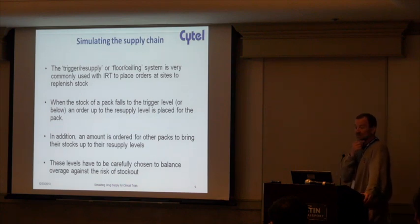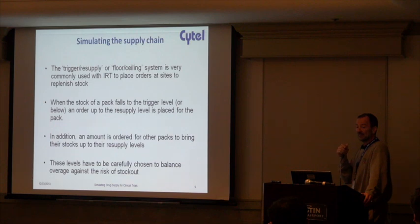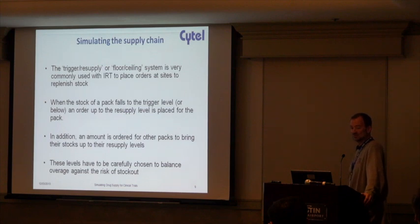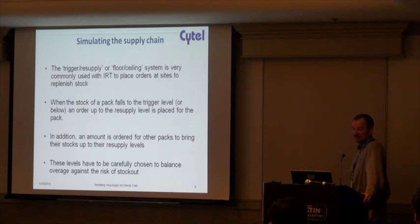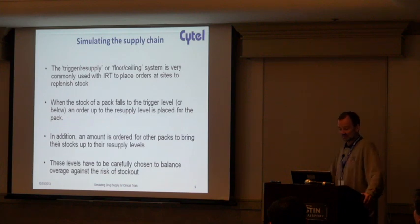We simulate the supply chain by setting trigger or resupply amounts so that at each depot and at each site, when the drug gets below a certain preset level — which we can tune — we'll do the resupply. When the stock reaches that level, we send out additional supply to get it back up to a preset amount. Those levels are carefully chosen via simulation to minimize the amount of overage while making the risk of stockout as small as the user wants.